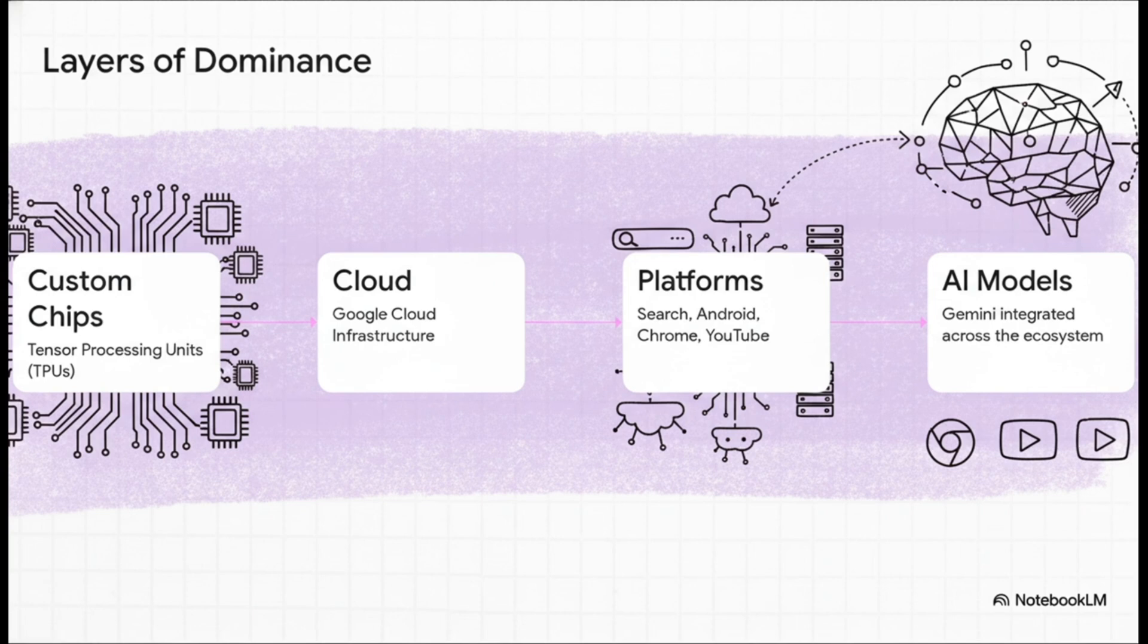This analysis breaks Alphabet's stack down into four key layers. So at the very bottom, you've got their custom-designed AI chips, the TPUs. Layered on top of that is their massive Google Cloud infrastructure. Then you have the layer that might be the most important of all. They're totally dominant platforms like Search, Android, and Chrome. And then at the very top, you have the Gemini AI models, which are getting woven into that entire ecosystem.